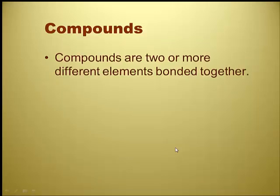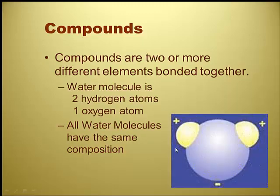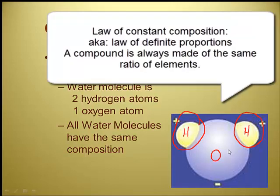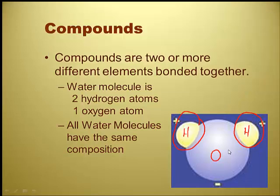Compounds are two or more different elements that wind up getting bonded together. Our typical example is the water molecule. You can see we've got two hydrogens and one oxygen — it almost looks like Mickey Mouse ears. It turns out all water molecules have the same composition, so every single water molecule is going to have two hydrogens and an oxygen. There's actually a law about that in chemistry — the law of constant composition. All water molecules have the exact same composition: two hydrogens, one oxygen, same ratio two to one, H2O.